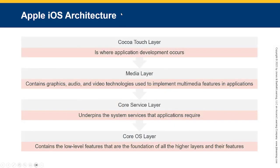The iOS architecture includes a Cocoa Touch layer where application development occurs, a Media layer containing graphics, audio, and video technologies used to implement multimedia features in applications, a Core Services layer which underpins the system services and applications require, and an OS level which provides low-level features that are the foundation for all the higher layers.